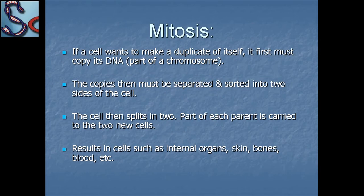Mitosis: if a cell wants to make a duplicate of itself, it first must copy its DNA — part of the chromosomes — in order to make the same duplicate cell.